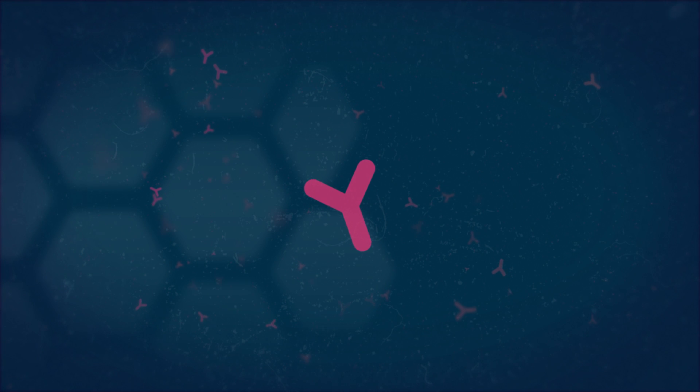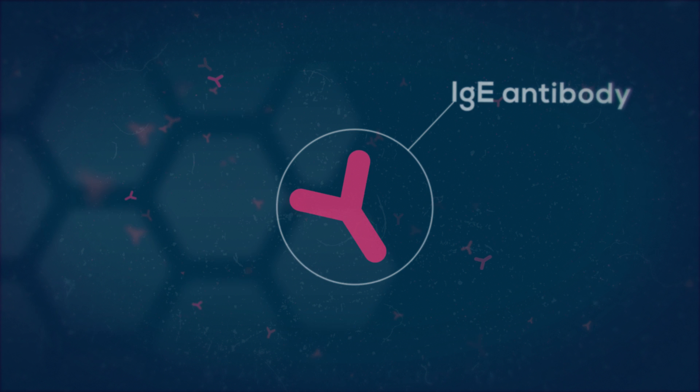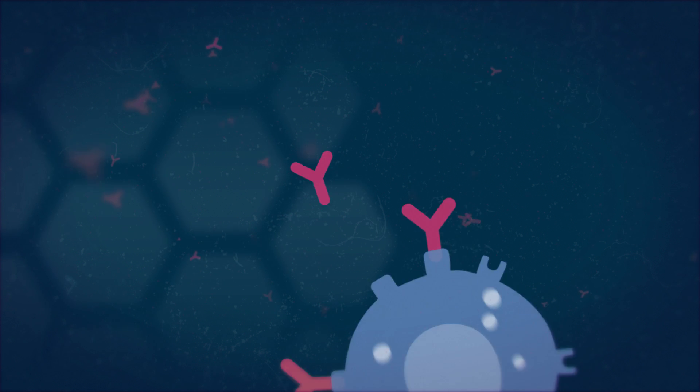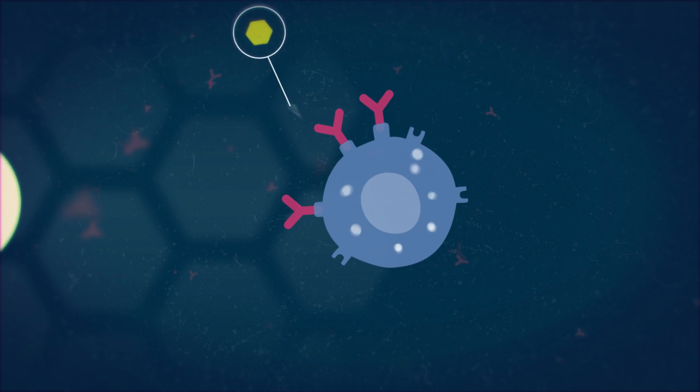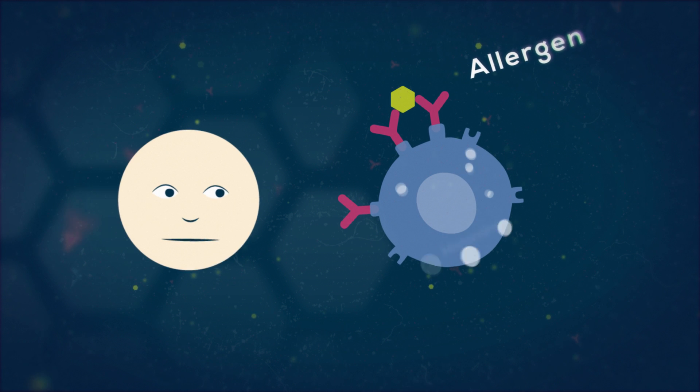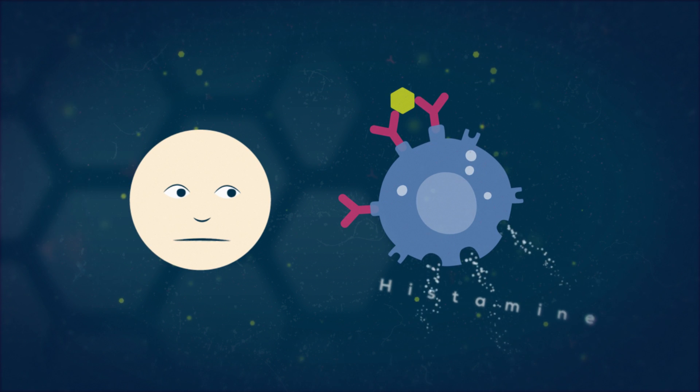With our vaccines we target a key protein, the IgE antibody. In an allergic reaction it recognises the allergen, and triggers the release of histamine from mast cells.